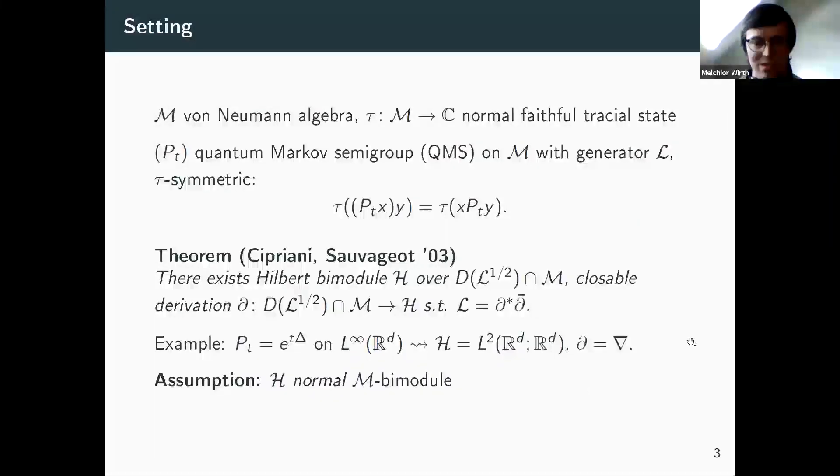And then there's one additional assumption we need. So this bimodule H, bimodule over the form domain intersected with my von Neumann algebra. And this here is the domain of—this is a star algebra, but of course, in general, not weak-star closed. And what we want is that the actions extend to normal actions of M on H. This is an additional assumption. And for those of you who listened to Marius Junge's talk, this is exactly equivalent to assuming that the Carré du Champ operator maps into L^1.